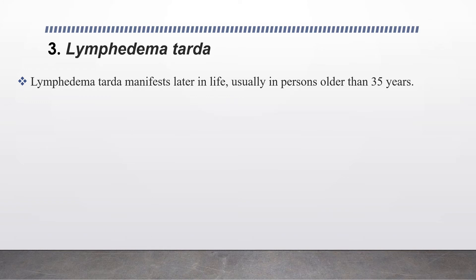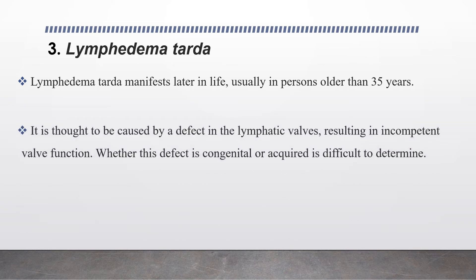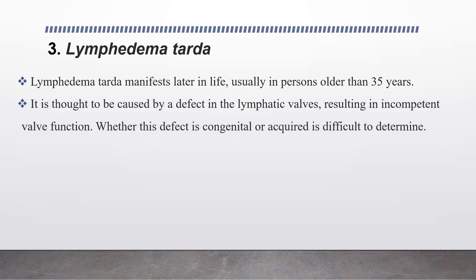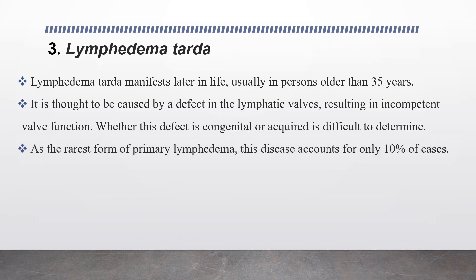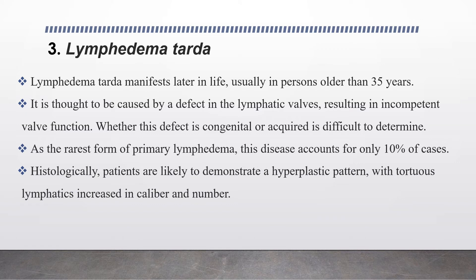The third type is lymphedema tarda, which manifests later in life, usually in persons older than 35 years of age, even though it is primary. It is thought to be caused by defects in lymphatic valves resulting in incompetent valve function, though whether this defect is congenital or acquired is difficult to determine. As the rarest form of primary lymphedema, it accounts for only 10% of cases. Histologically, patients are likely to demonstrate a hyperplastic pattern with tortuous lymphatics increased in caliber and number.